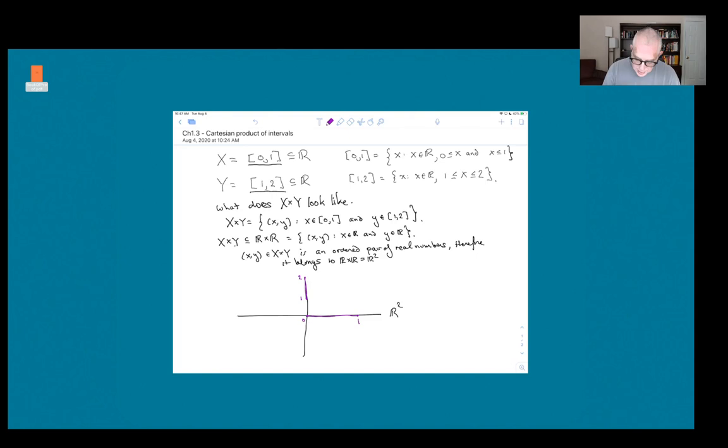And so the ordered pairs themselves all have to fall in this box, which should be a square but because I don't have very good artistic skills it's a rectangle, it's a 1 by 1 square. Every point in here has x coordinate between 0 and 1 and y coordinate between 1 and 2, so every point in this square belongs to X cross Y.